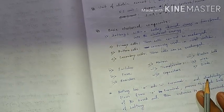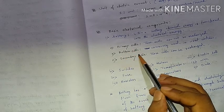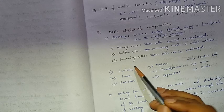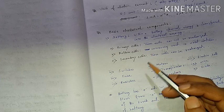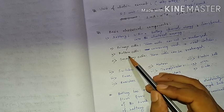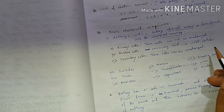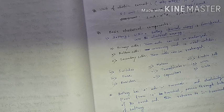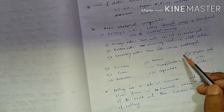The types of cells include primary cells, button cells, and secondary cells. Primary cells are single-use batteries, while secondary cells are rechargeable and can be charged again.